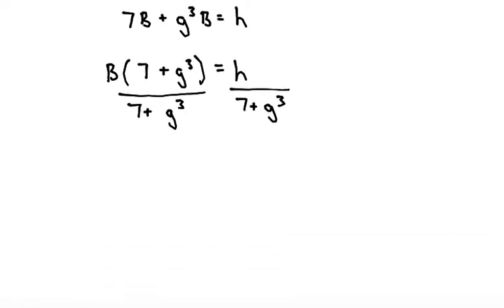Then what I'm left with is 7 plus g cubed divided by 7 plus g cubed. These two cancel out because I have the same factor on the top and the bottom.